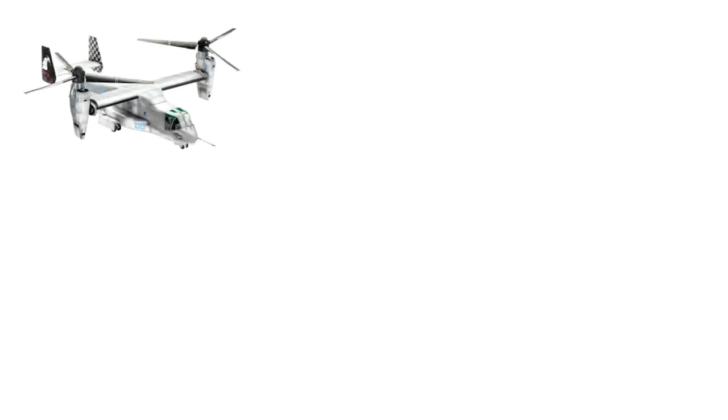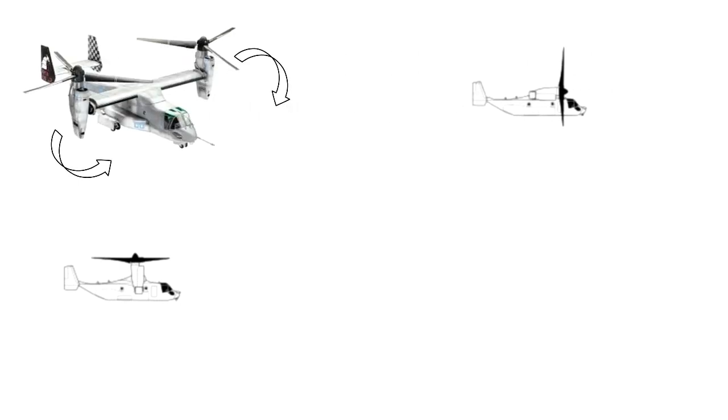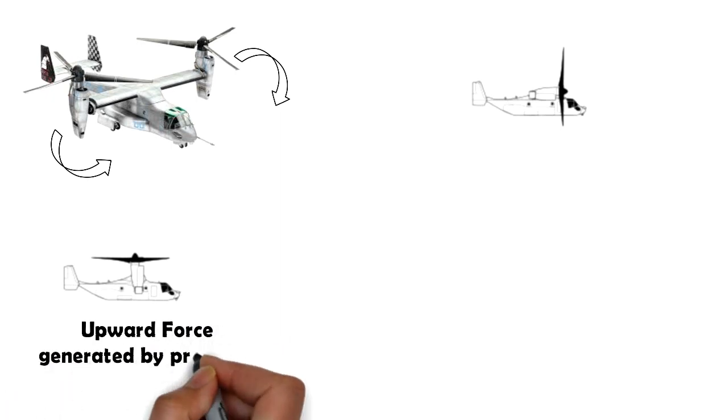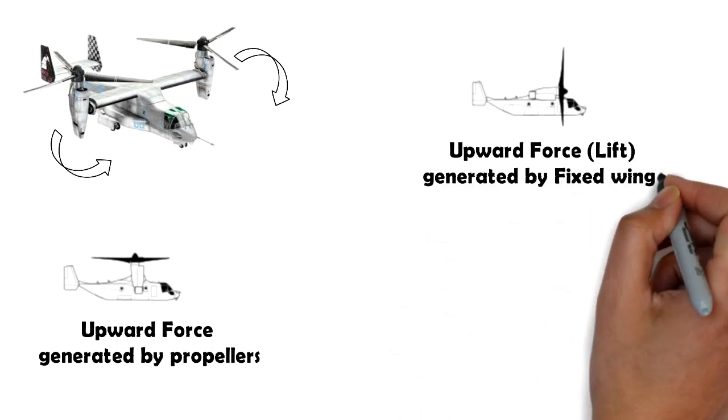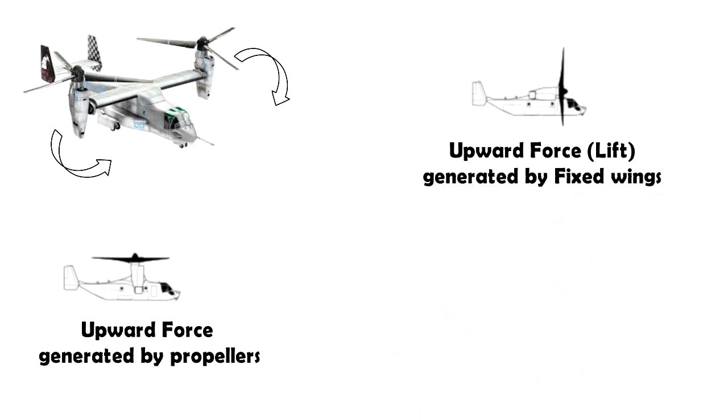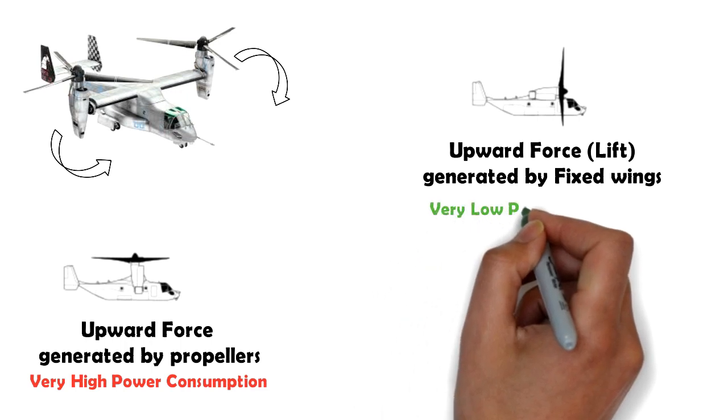Once the aircraft is in the air and starts to move horizontally, the propeller blades will gradually tilt in the forward direction. Instead of the initial upward thrust force alone, the lift force will start to generate as the aircraft picks up speed. Gradually the lift generated by the wings will take over as the only force to keep the aircraft in the air. This will reduce the power consumption by the fans substantially.